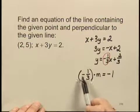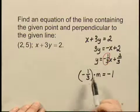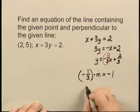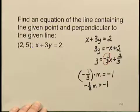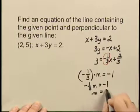Well, if I multiply everything by negative 3 here, let me write this out. This gives me negative 1 third m equals negative 1. Multiplying everything by negative 3, I have m equals 3.